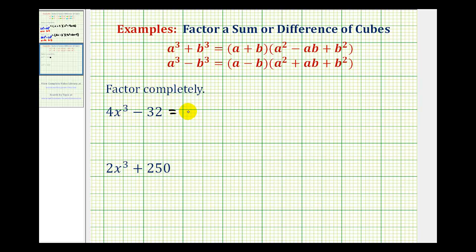So we'll start by factoring out the four. This will leave us with four times the quantity of x³. Then there are eight fours in 32, so we'll have minus eight. Notice how this binomial factor is a difference of cubes, so now we can factor this further.